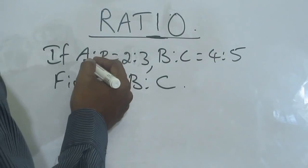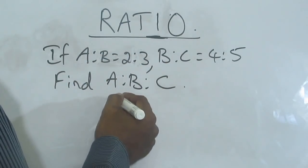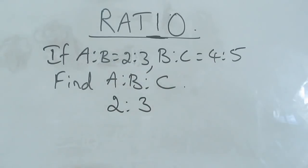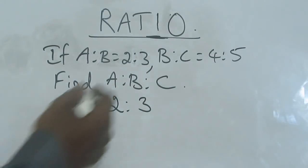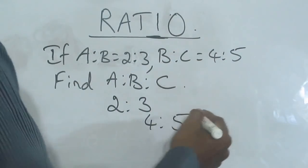So write — what is given in the first line? A is to B. What is the value? 2 is to 3. What is given in the second line? B is to C, that is 4 is to 5.